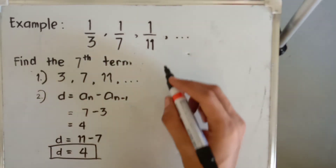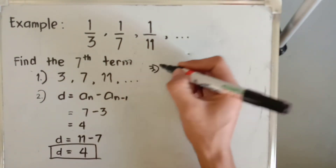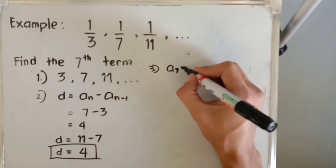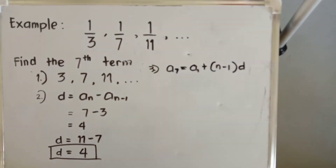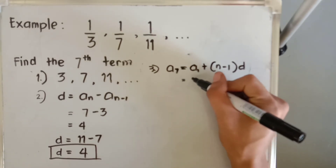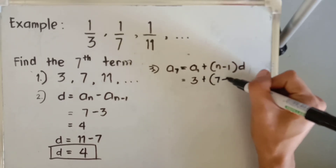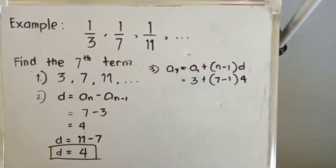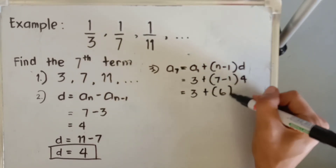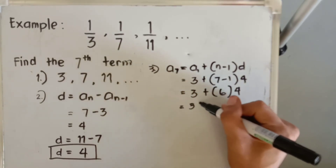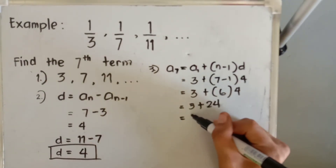After finding the common difference, we find the seventh term of the arithmetic sequence using the formula: a sub seven equals a sub one plus n minus one multiplied by the common difference. So we have three plus seven minus one, which is six, multiplied by four. Six times four is twenty-four, and three plus twenty-four equals twenty-seven.